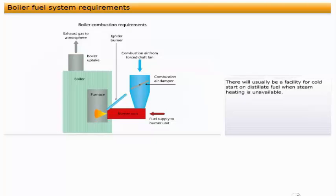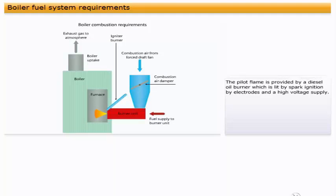There will usually be a facility for cold start on distillate fuel when steam heating is unavailable. A pilot flame is used to ignite the main burner. The pilot flame is provided by a diesel oil burner, which is lit by spark ignition by electrodes and a high voltage supply.